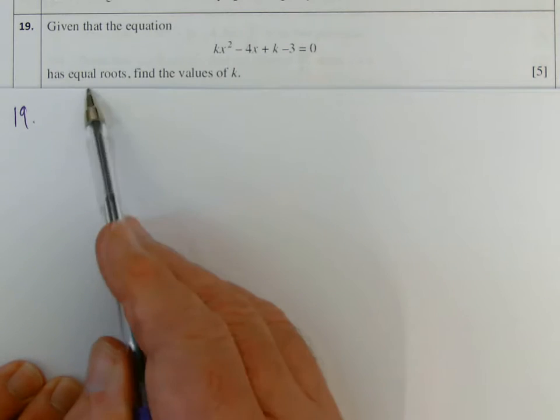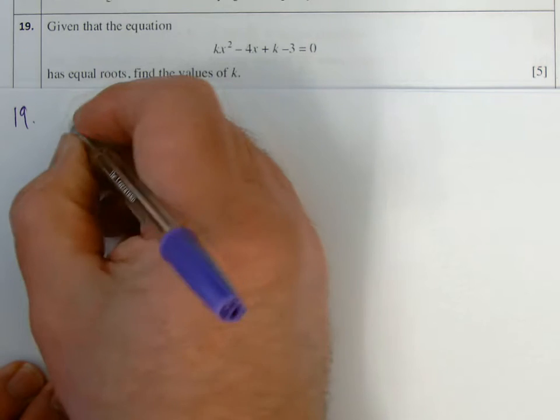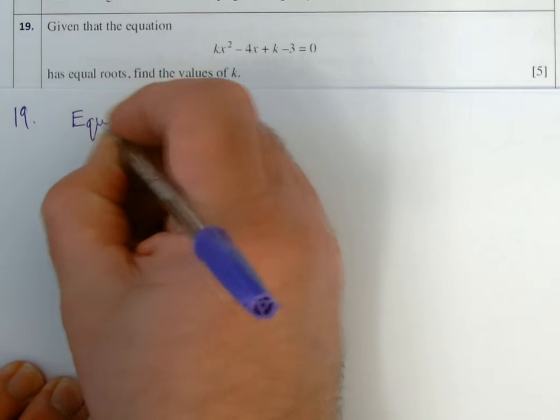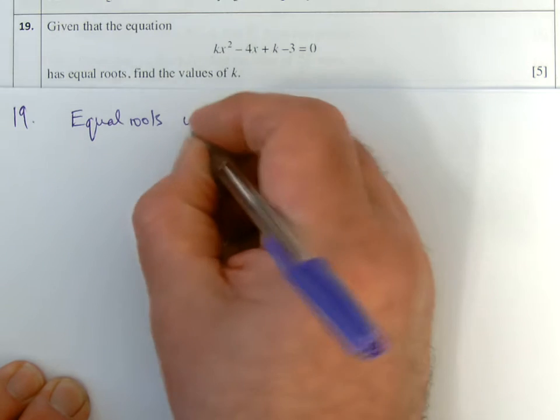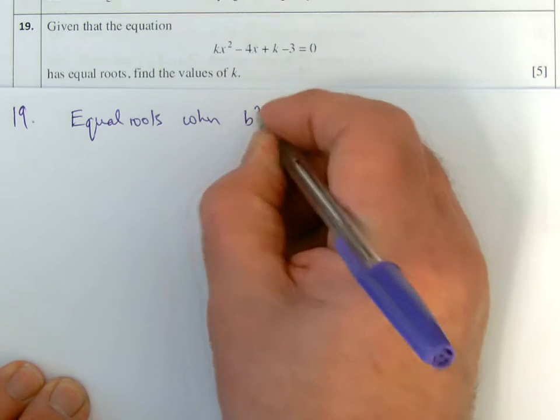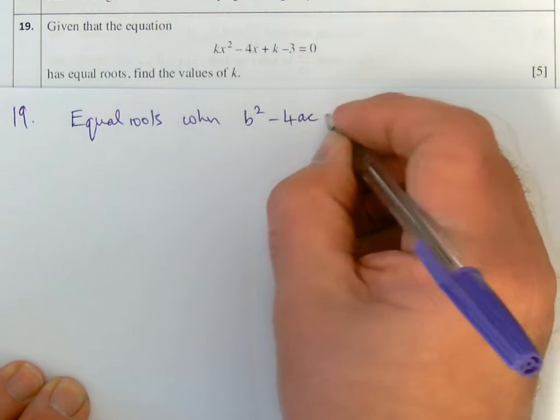Okay, I want the condition for this equation to have equal roots. The condition for equal roots is that the discriminant is equal to naught. So equal roots when b squared minus 4ac is equal to naught.